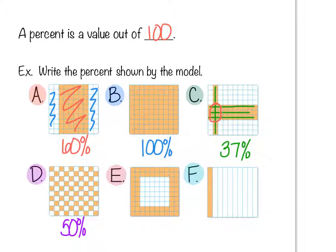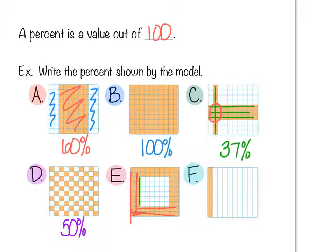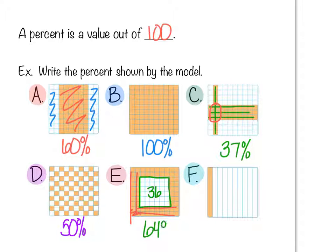In example E, instead of counting rows, we have a 6 by 6 square inside, and 6 by 6 is 36. So we take 100 and subtract the squares that aren't shaded: 100 minus 36 is 64 percent. That's an easier way of doing example E.